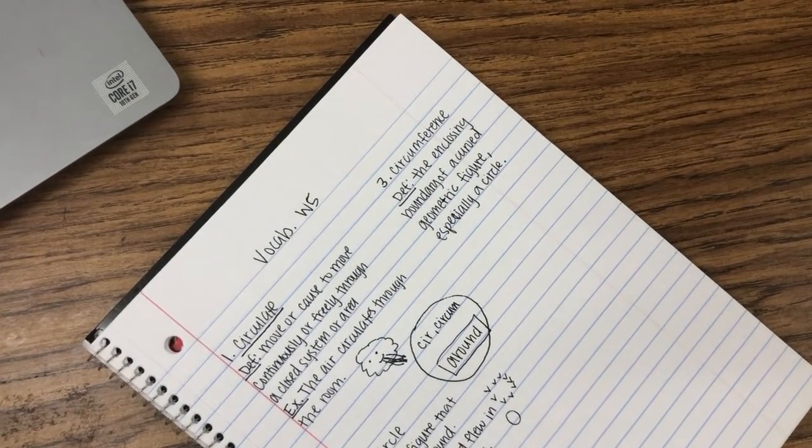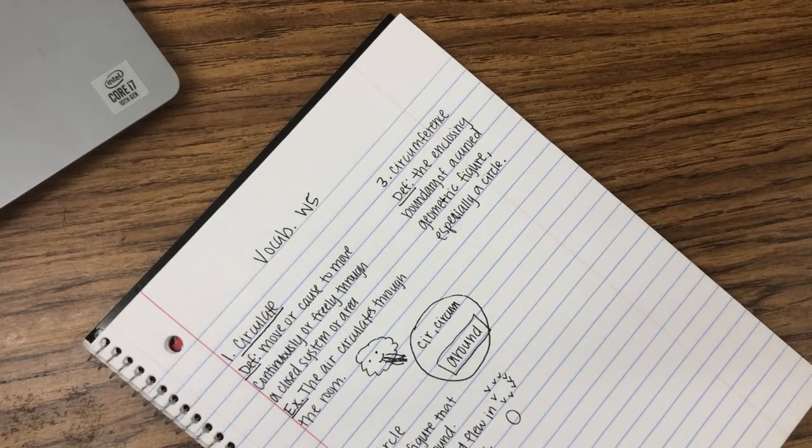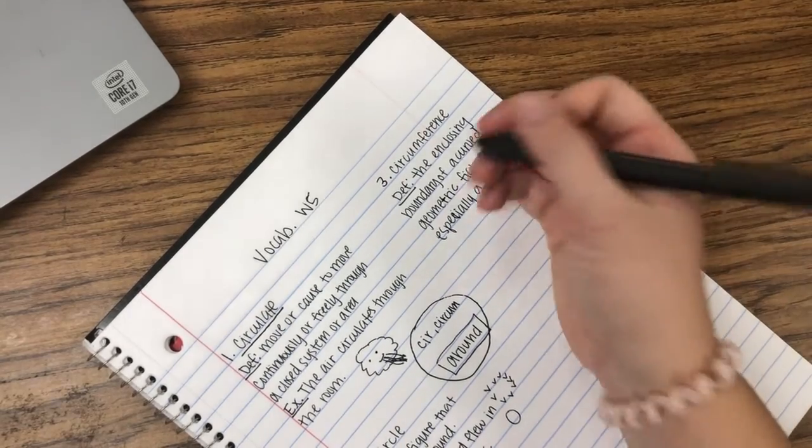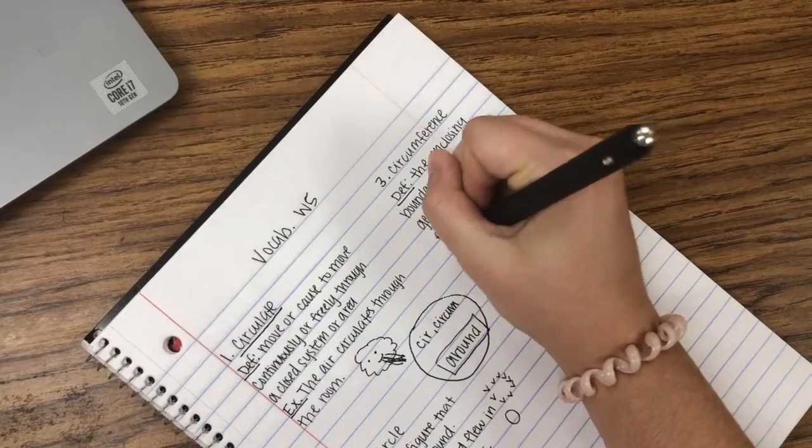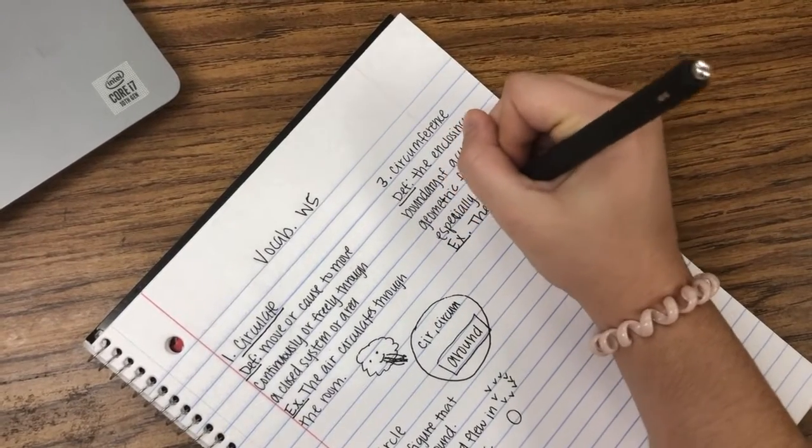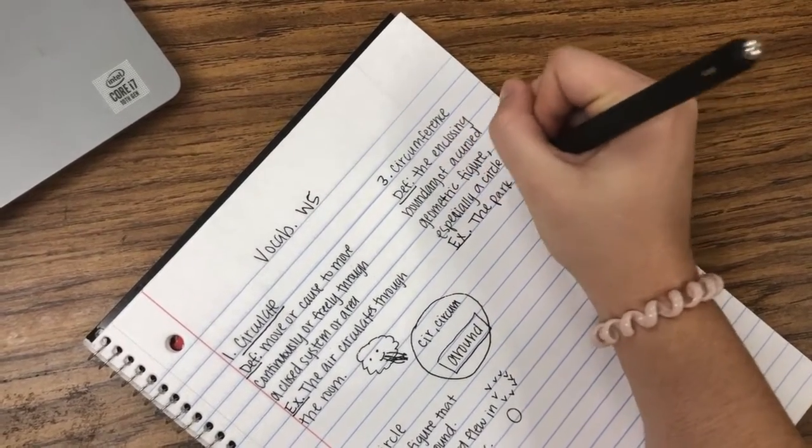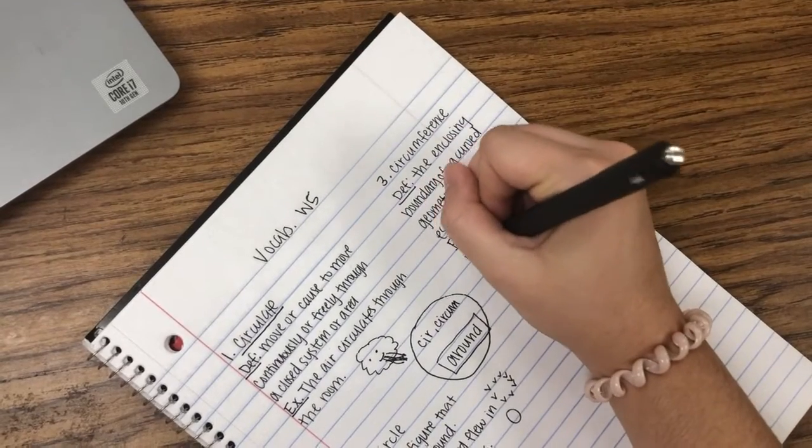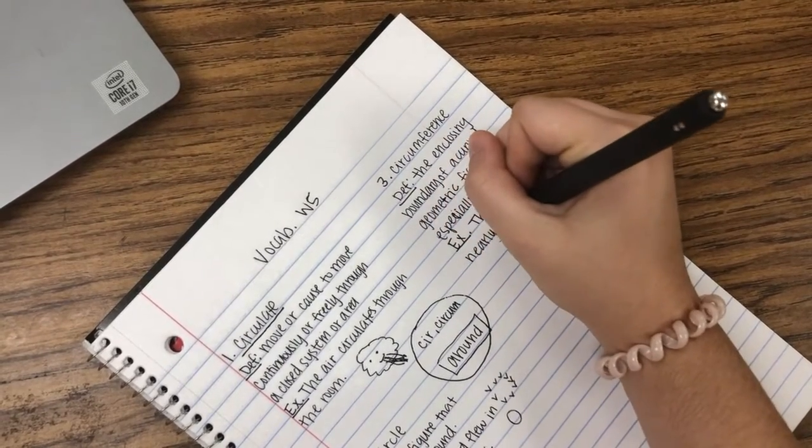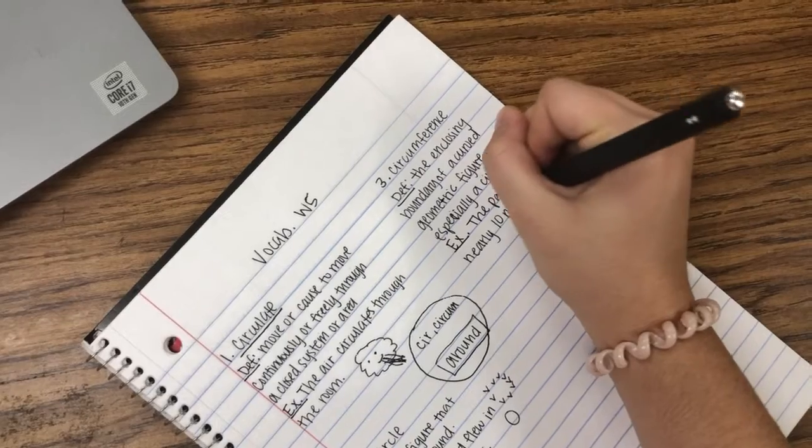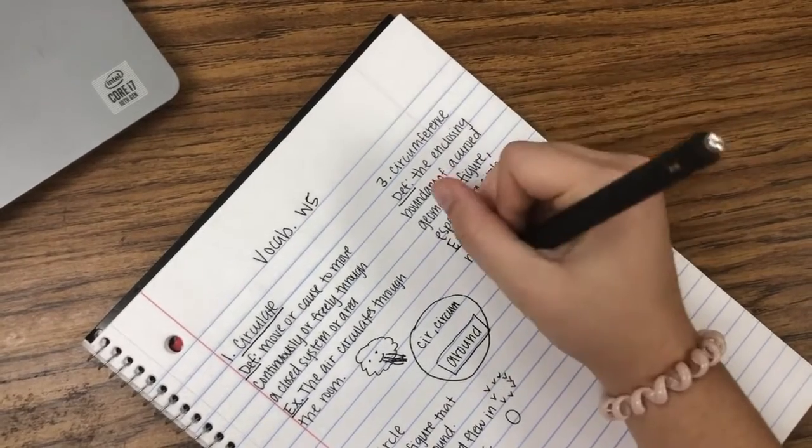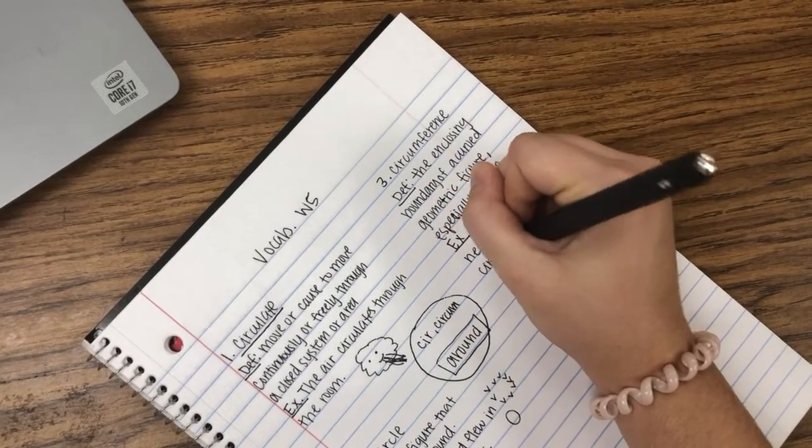And then our example sentence is going to be: the park is nearly 10 miles in circumference.